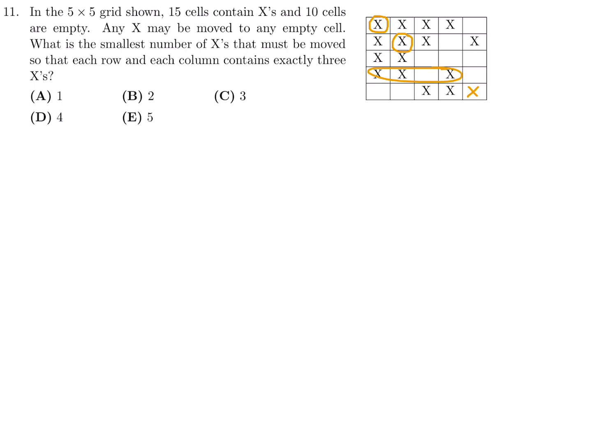This row only has 2, so I think that will fit really nice there. This has 3. This now has 3. This now has 3. I've removed the ones that I've circled. But this only has 2. So therefore, that second X I will put there. And I think that does it. All the rows and all the columns have 3 X's. So number 11, it's B. I only had to move 2 X's.